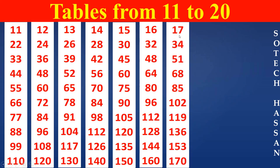17th table. 17 ones are 17. 17 twos are 34. 17 threes are 51. 17 fours are 68. 17 fives are 85.